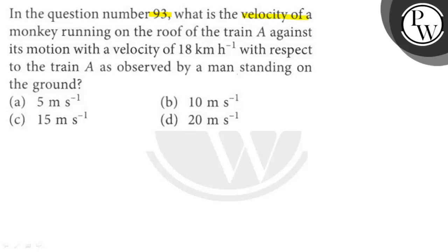What is the velocity of a monkey running on the roof of train A against its motion with a velocity of 18 km per hour with respect to the train A as observed by a man standing on the ground?